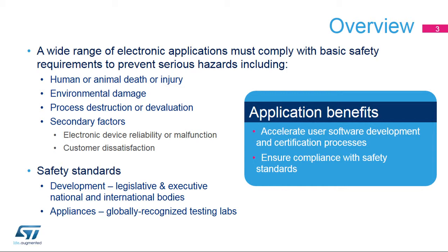The primary goal is to prevent human death or injury, as well as environmental damage. But there are many other important factors at a lower level, such as the devaluation of an industrial process, including the loss of important data, connections, power, or control, and many others.